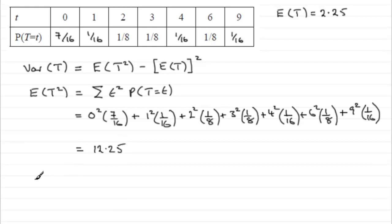And so, therefore, all we need to do is just fill that back into our formula here for the variance of t. Variance of t then equals e of t squared, which is 12.25, minus then e of t all squared. So e of t then is 2.25, and we just need to square that. And what do we get? Well, you get 7.1875.